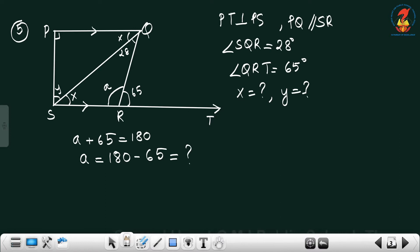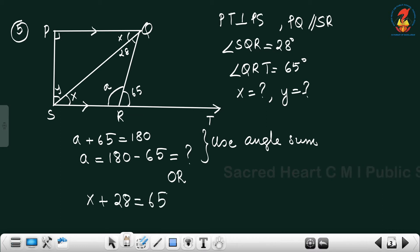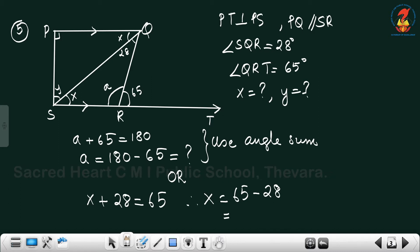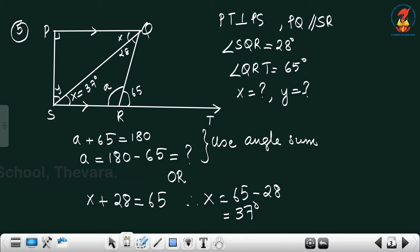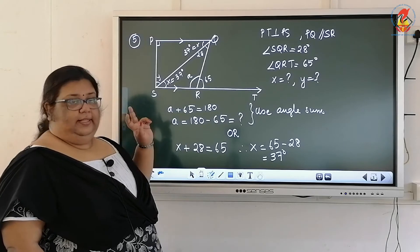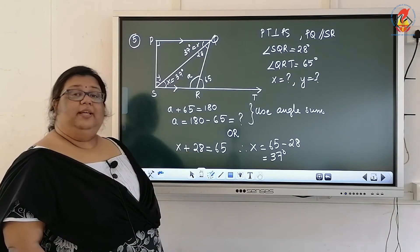Then X plus 28 plus A equals 180 degrees by angle sum property, and you can find the value of X. Alternatively, using exterior angle property: X plus 28 equals the exterior angle 65. So X equals 65 minus 28, which equals 37 degrees. There are two ways to find X — either angle sum property or exterior angle property.